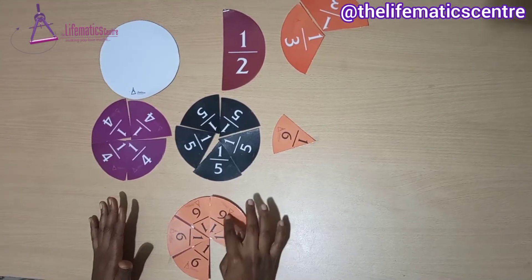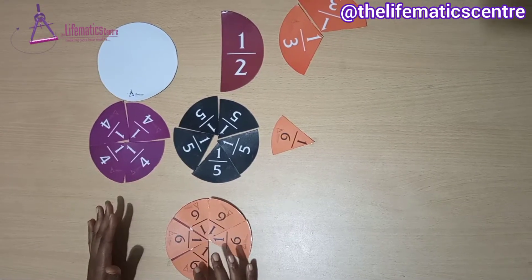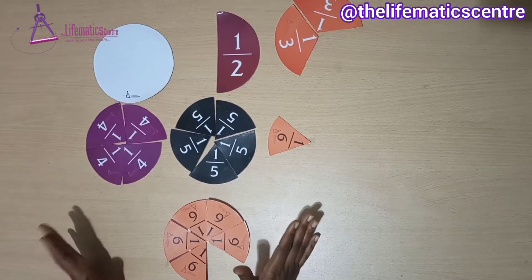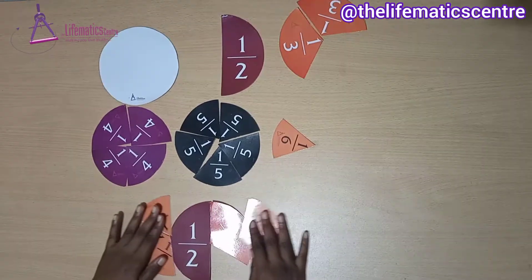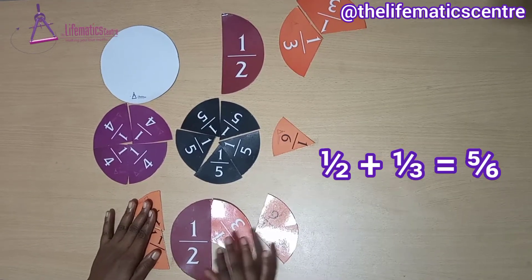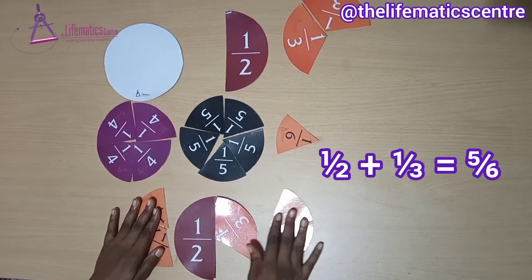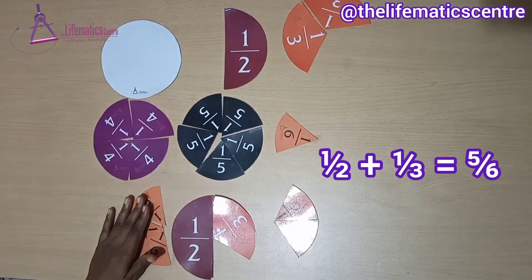One, two, three, four, five - that's 5/6. Therefore, 1/2 plus 1/3 is equal to 5/6.